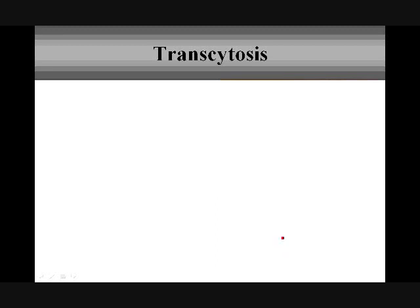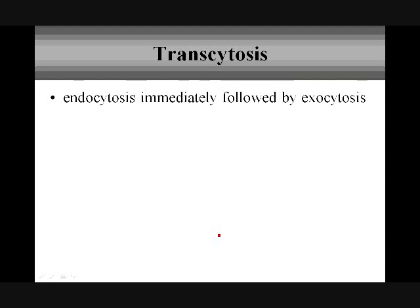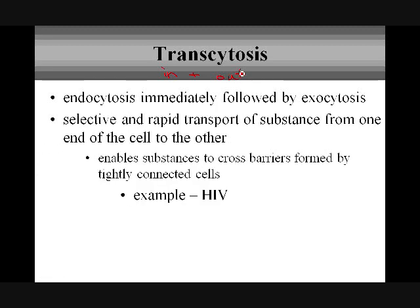Then we have transcytosis, probably the least familiar. This is basically endocytosis immediately followed by exocytosis — it's a quick in-and-out movement, rapid transport from one end of the cell to the other. This is how substances can cross barriers formed by tightly connected cells. For example, the HIV virus uses transcytosis to move into one cell, out of that cell, and into neighboring cells very quickly for its transmission.